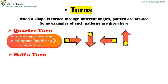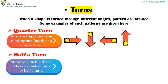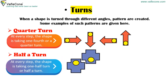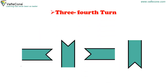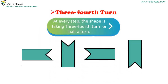Half a turn — at every step, the shape is taken one half turn, or half a turn. Three-quarter turn — at every step, the shape is taken three-fourth turn. Nets.